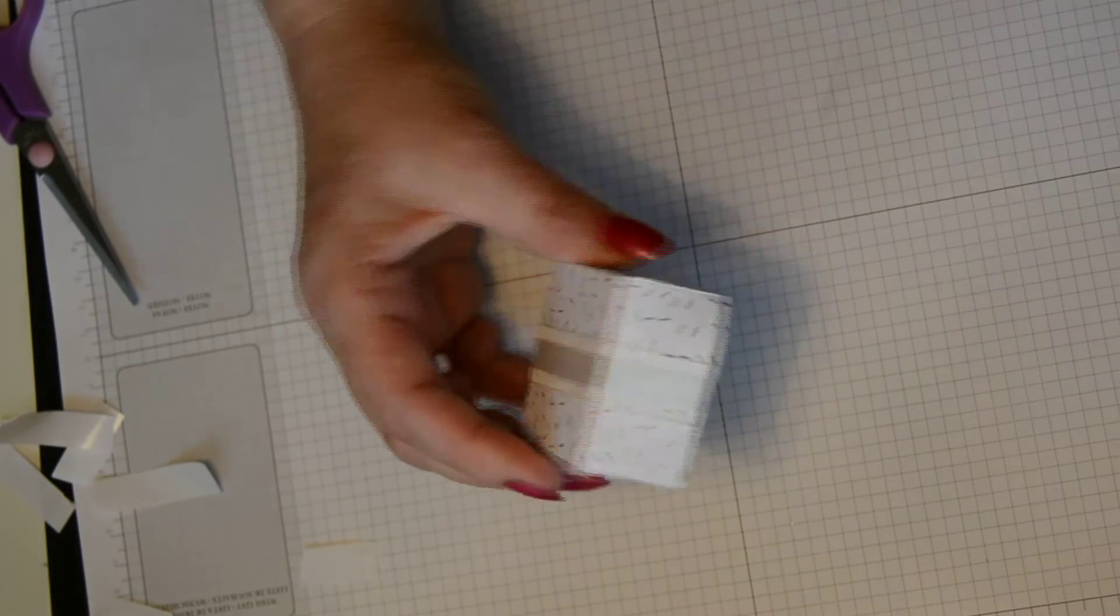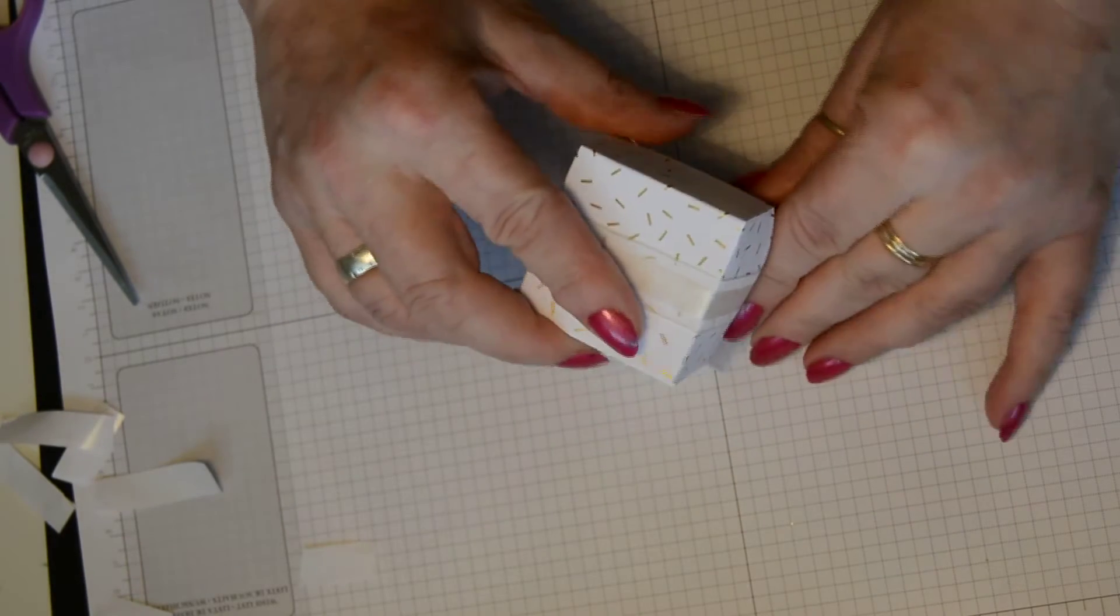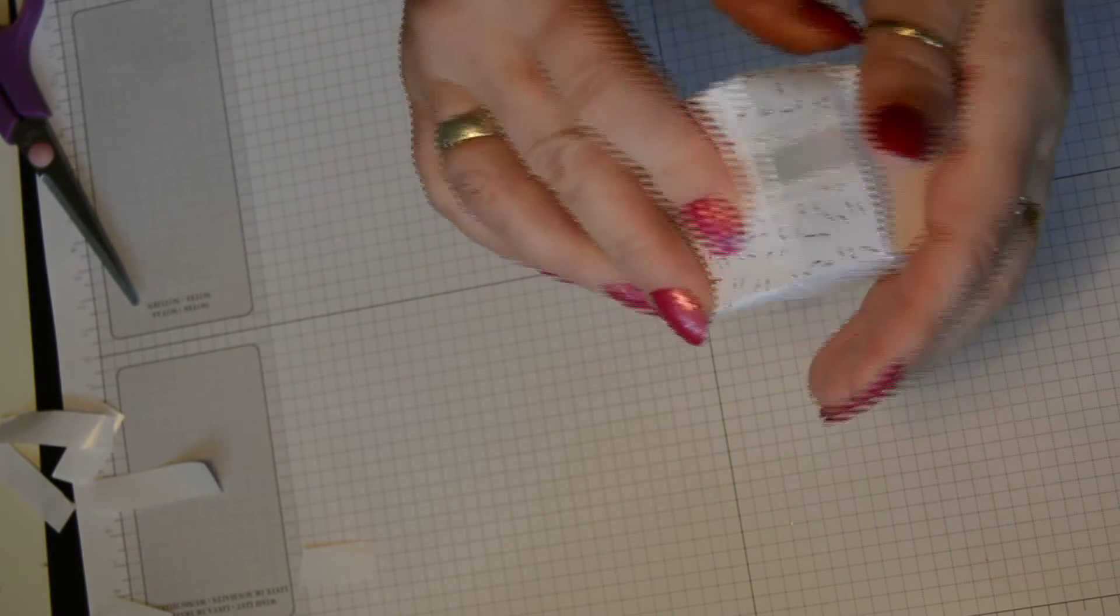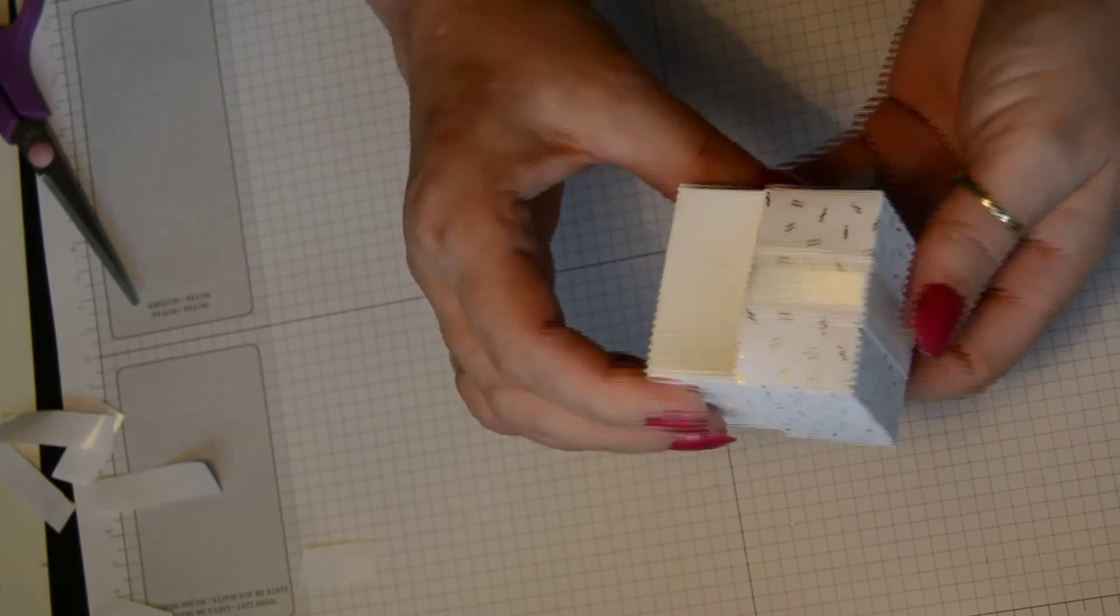And it covers where you've put your ribbon. So just pop that across and there. Isn't that lovely? And that should just fit nice and snugly on your box, on your base. Isn't that beautiful?